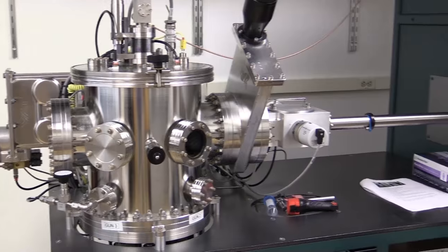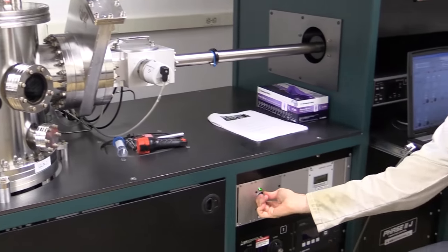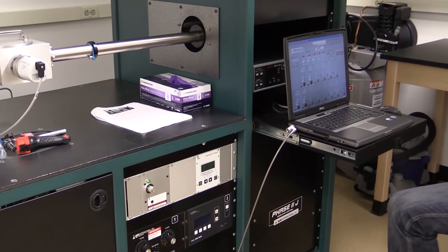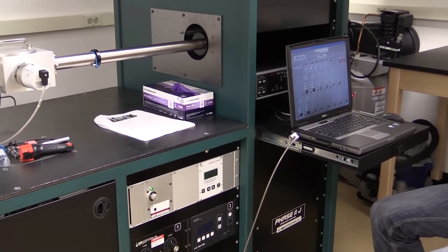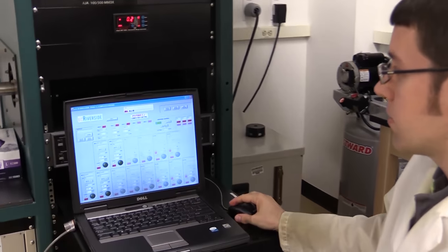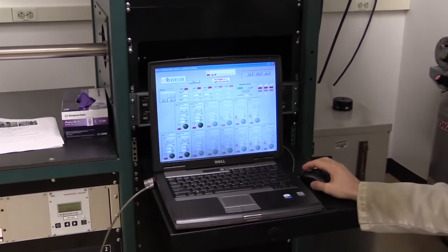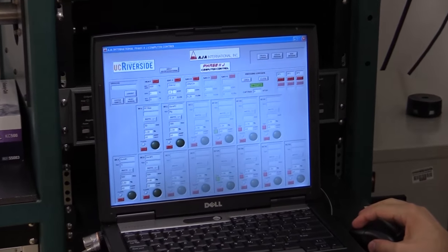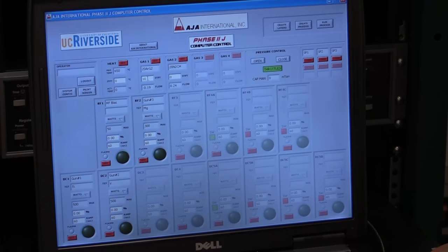I'll turn on substrate rotation. You see this green LED comes on. Now I'll go over to the laptop. I'm going to throttle the VAT valve. I'm going to start the argon flow. Here I'm using 10 SCCM, which means standard cubic centimeters per minute.